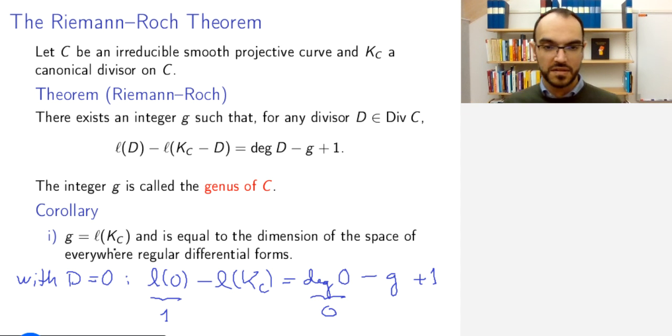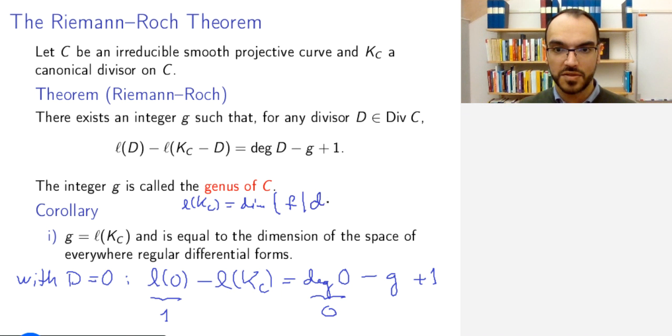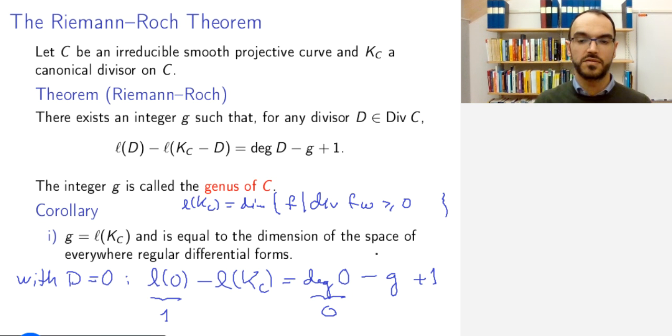And one interpretation is that this is the dimension of the space of everywhere regular differential forms. Why is that? Well, ℓ(K_C), this is the dimension of the vector space of all f, such that div(f) is greater than or equal to minus div(ω) for some differential form ω. So, by moving ω to the other side and using the fact that div is a homomorphism, or that div relies on ord_p, which is a homomorphism, we get this thing. So, these are precisely those differential forms.